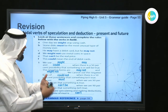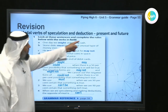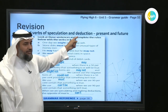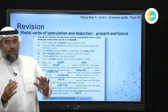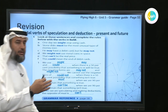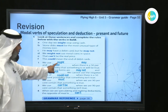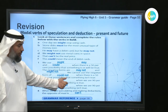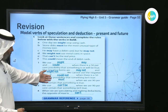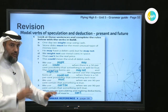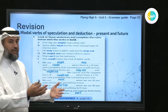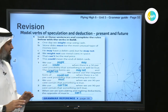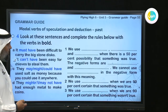Today we're going to take even more modal verbs. Last time we took modal verbs of speculation and deduction in the present and future. Speculation means: we use may, might, could, might not, or may not. If you are sure — 90% sure — you say 'must.' For example: 'It must have been Ahmed who did this.' If you're 50% sure, you use 'might.' That's speculation.